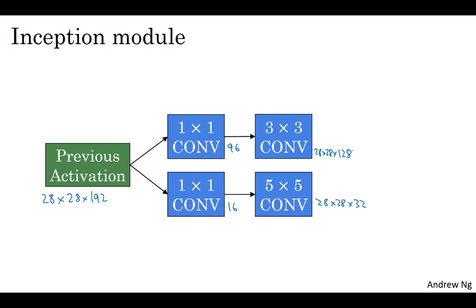And then maybe you want to consider a one by one convolution as well. There's no need to do a one by one followed by another one by one. So there's just one step here. And let's say this outputs 28 by 28 by 64.